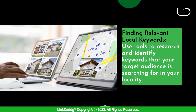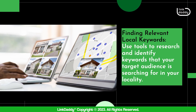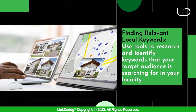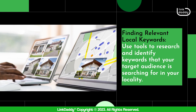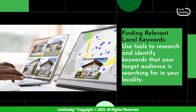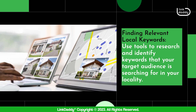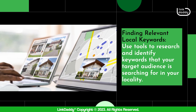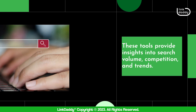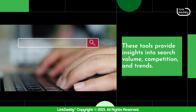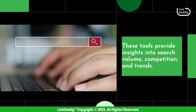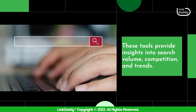Step two — finding relevant local keywords: Use tools to research and identify keywords that your target audience is searching for in your locality. These tools provide insights into search volume, competition, and trends.